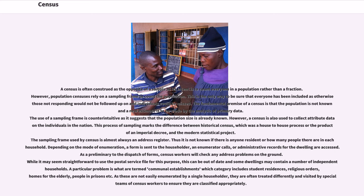A particular problem is what are termed communal establishments, which category includes student residences, religious orders, homes for the elderly, people in prisons, etc. As these are not easily enumerated by a single householder, they are often treated differently and visited by special teams of census workers to ensure they are classified appropriately.